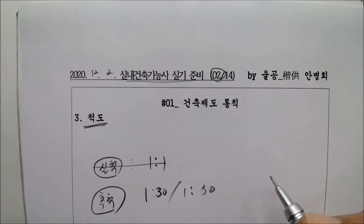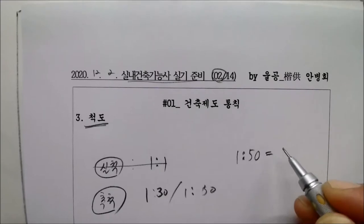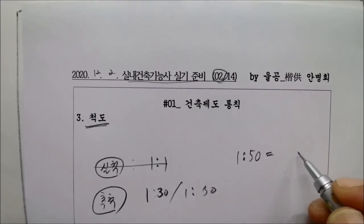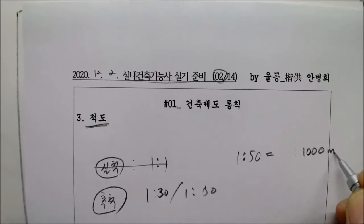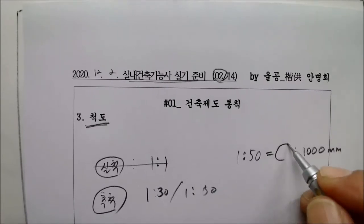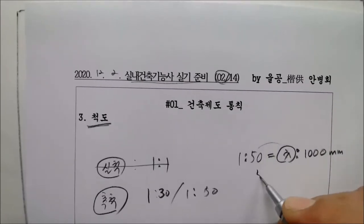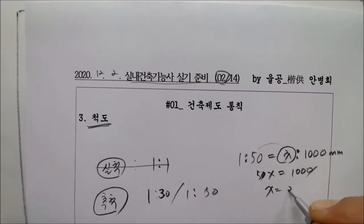쉽게 얘기하면 여러분들 1대50인 경우는 계산 잘해주세요. 자 1미터는. 자 쉽게 얘기하면 실질적으로 1미터가 1000미리미터입니다. 1000미리미터를 얼마를 표현해야 될까요? 이거 수학식을 배웠죠? 자 이걸 x라면 50x는 1000입니다. 따라서 x는 얼마? 20.